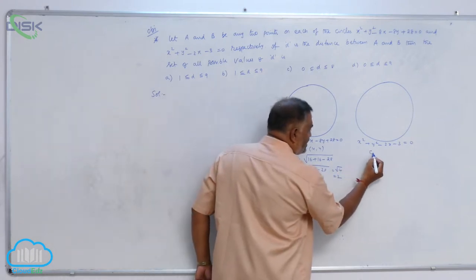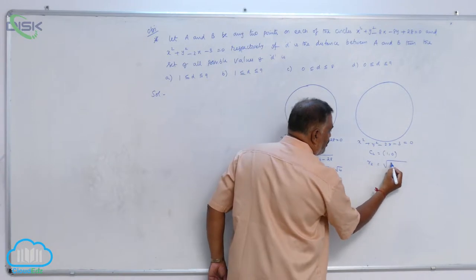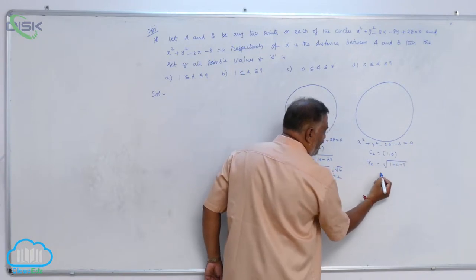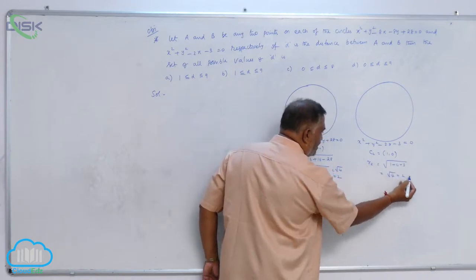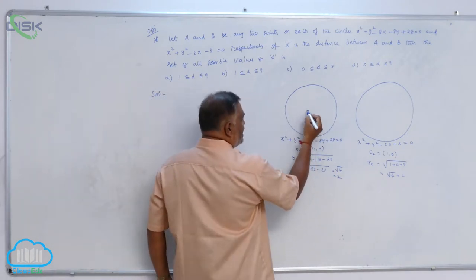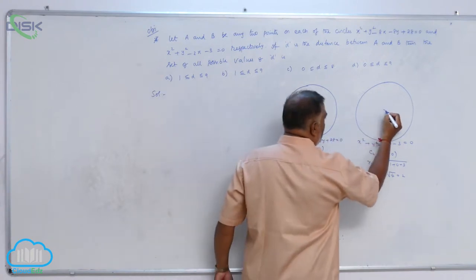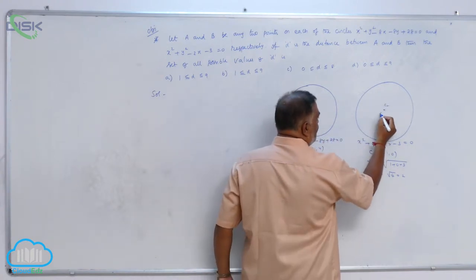Here, center C₂ = (1, 0). Radius = √(1 + 0 + 3) = √4 = 2. Now, you can see C₁ is at (4, 4) and C₂ is at (1, 0).